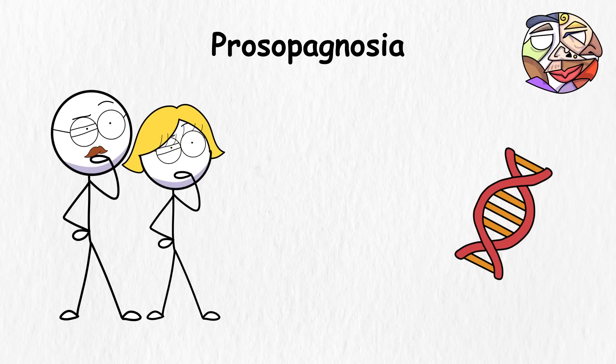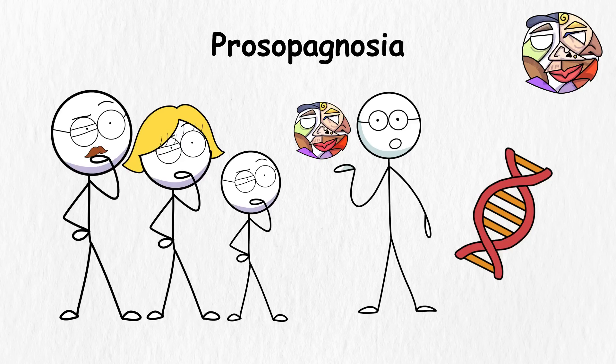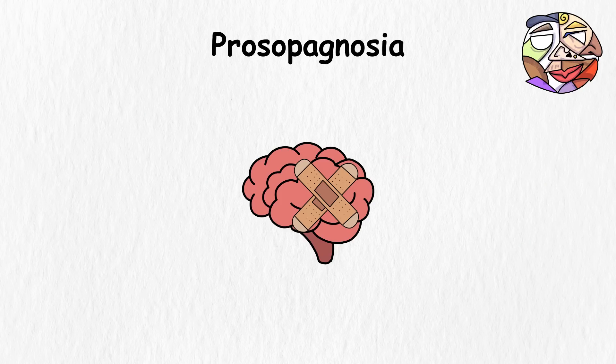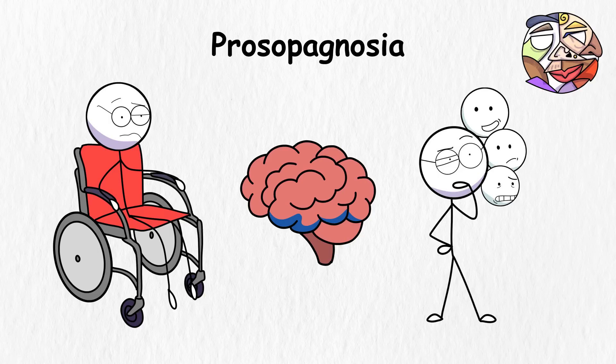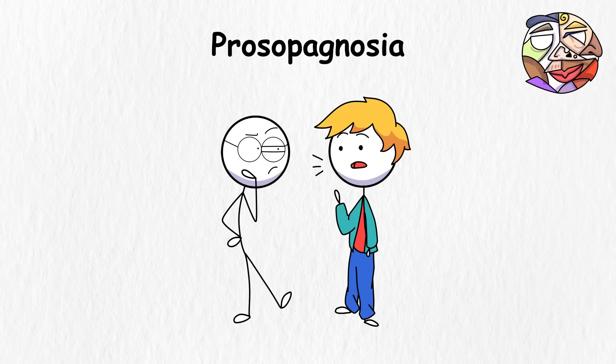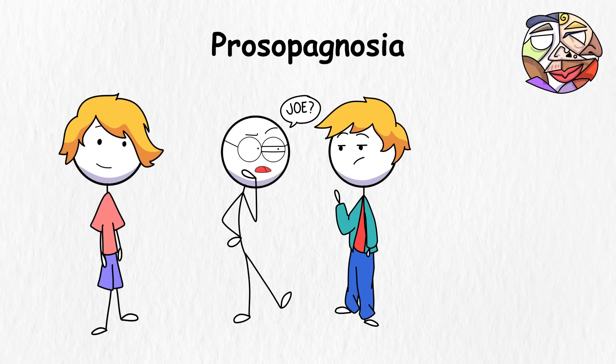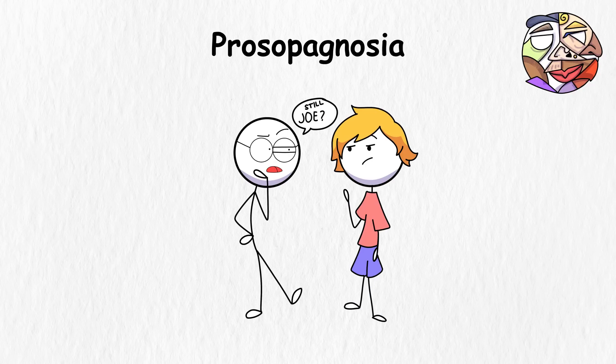It can also be passed down through your genetics. If someone in your family has a history of forgetting faces, there's a good chance you'll suffer the same condition too. But it can also be acquired, especially if you suffer traumatic brain injury, strokes, or degenerative diseases. The biggest problem with this condition is that you can't interpret facial expressions and must constantly rely on hairstyle, clothing, or voice to identify people. So if your friends keep changing anything about their appearance, you'll have difficulty recognizing them.